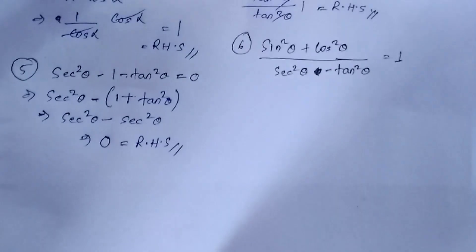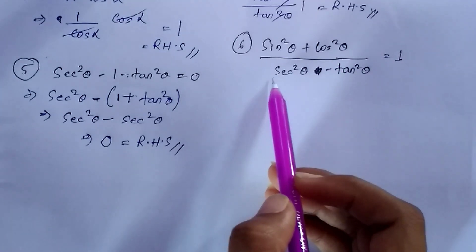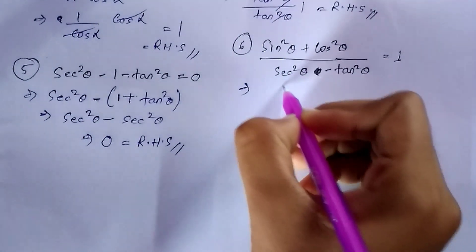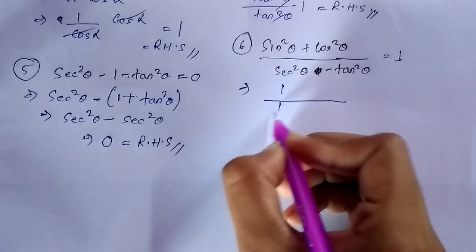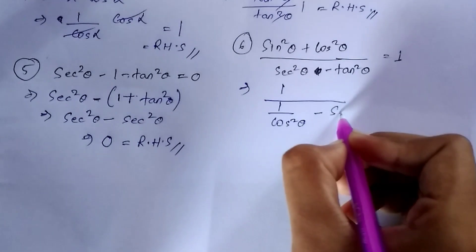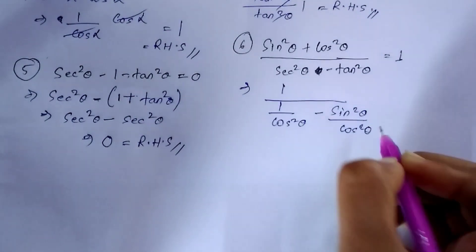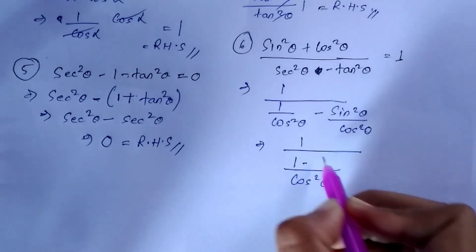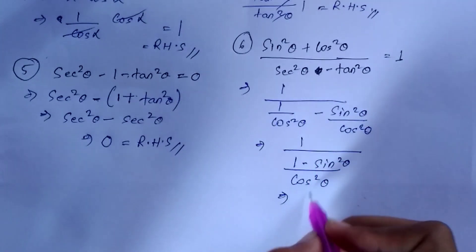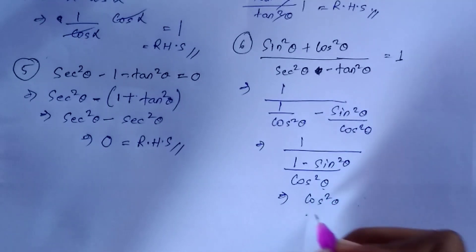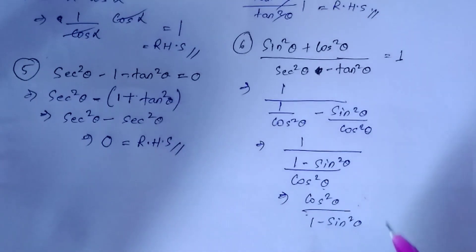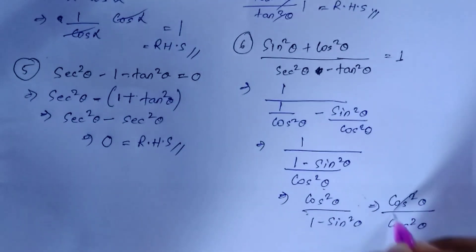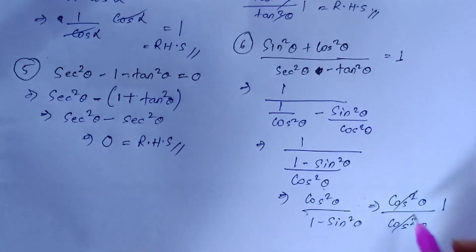Question number 6: prove that (sin²θ + cos²θ)/(sec²θ − tan²θ) = 1. The numerator sin²θ + cos²θ = 1. Now sec²θ = 1/cos²θ and tan²θ = sin²θ/cos²θ. Taking LCM, the denominator becomes (1 − sin²θ)/cos²θ. Flipping the fraction gives cos²θ/(1 − sin²θ). We know 1 − sin²θ = cos²θ, so cos²θ/cos²θ = 1, which equals your RHS. Hence proved.